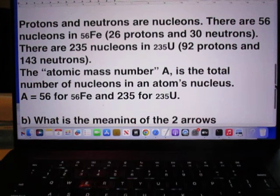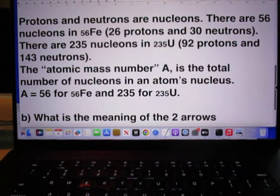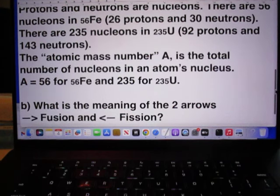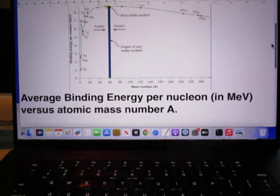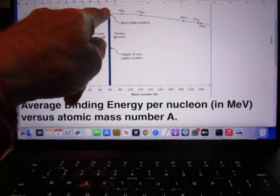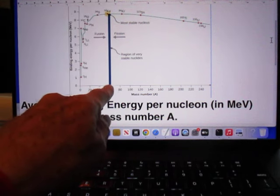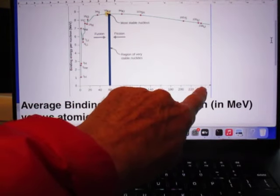The atomic mass number A is the total number of nucleons in an atom's nucleus, of course. A is 56 for iron-56, and A is 235 for uranium-235. So here, in this axis, iron should be at 56. And uranium-235 should be here at 235.